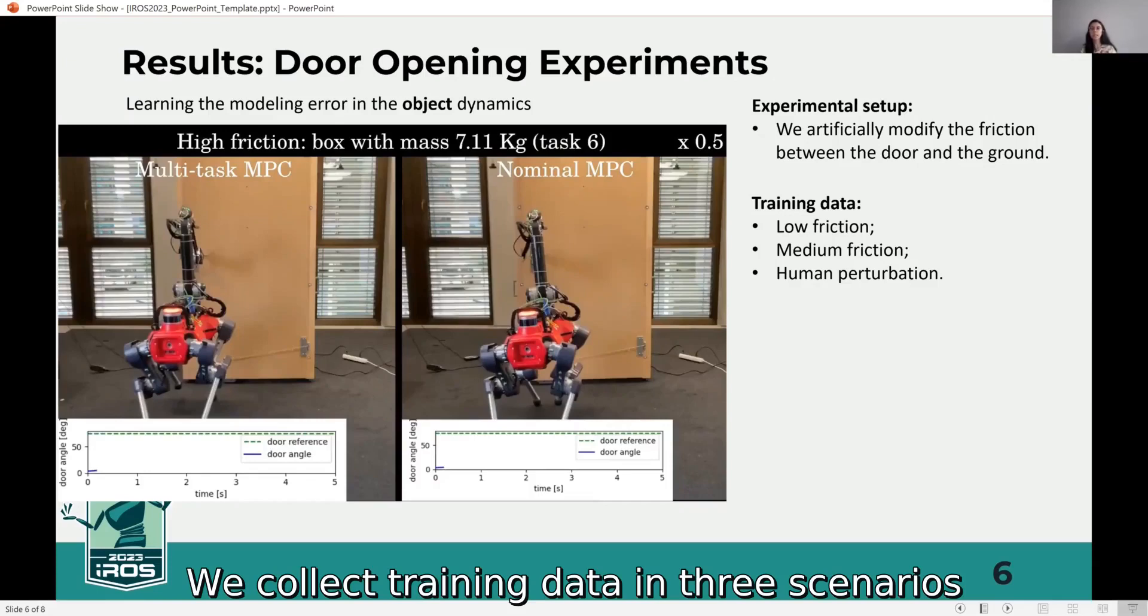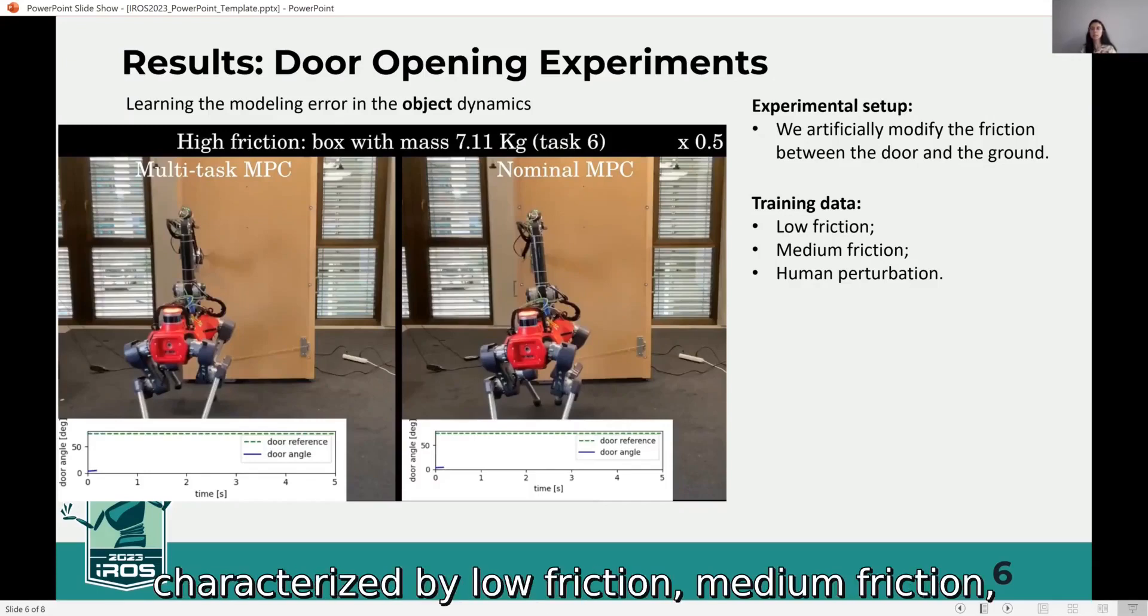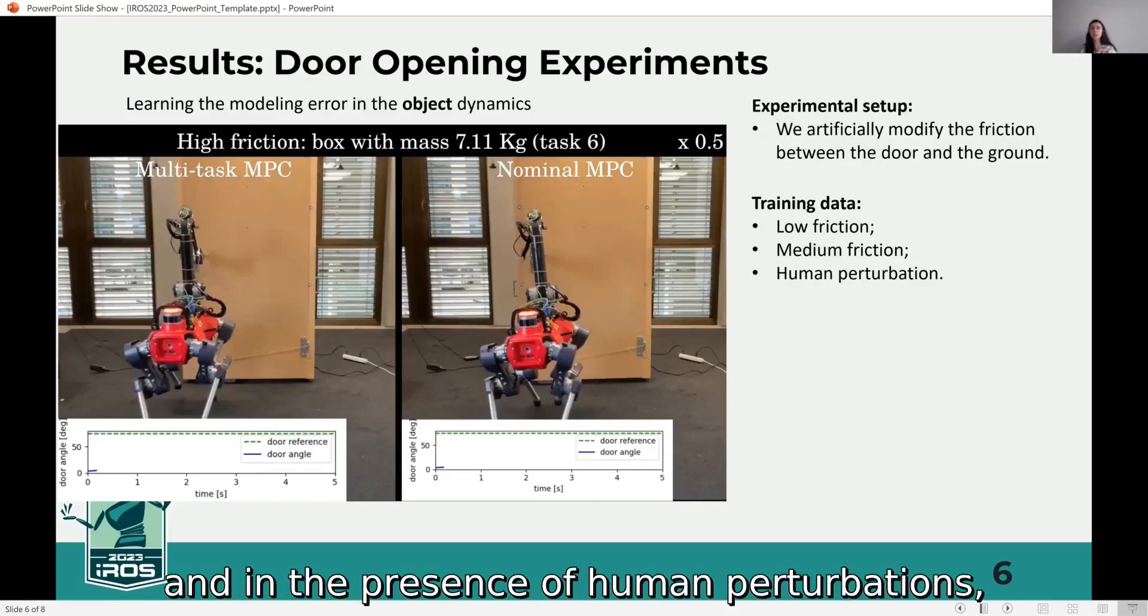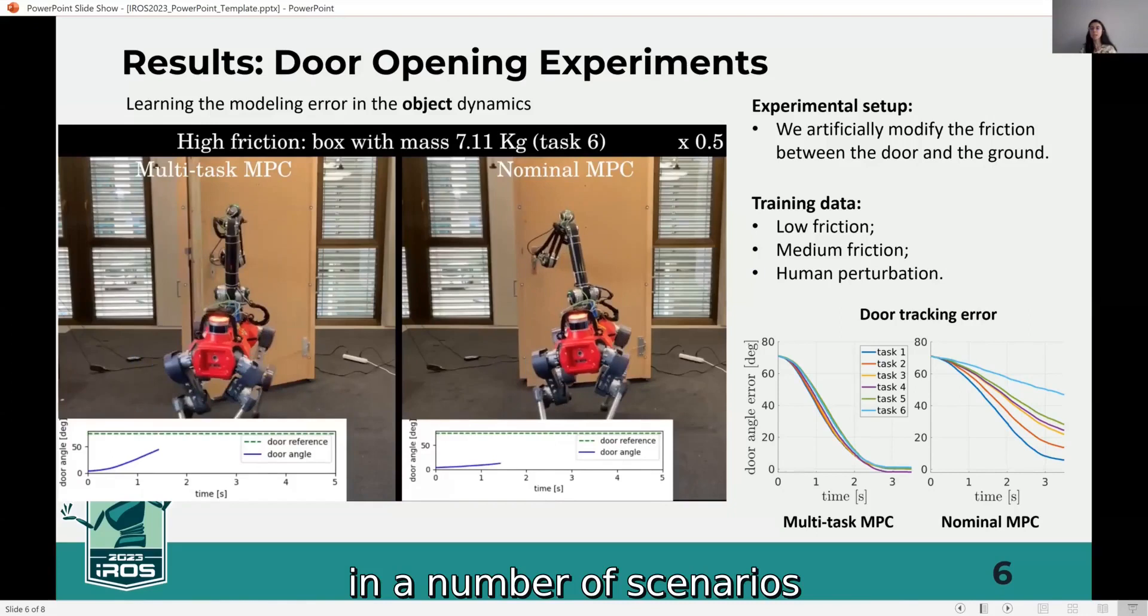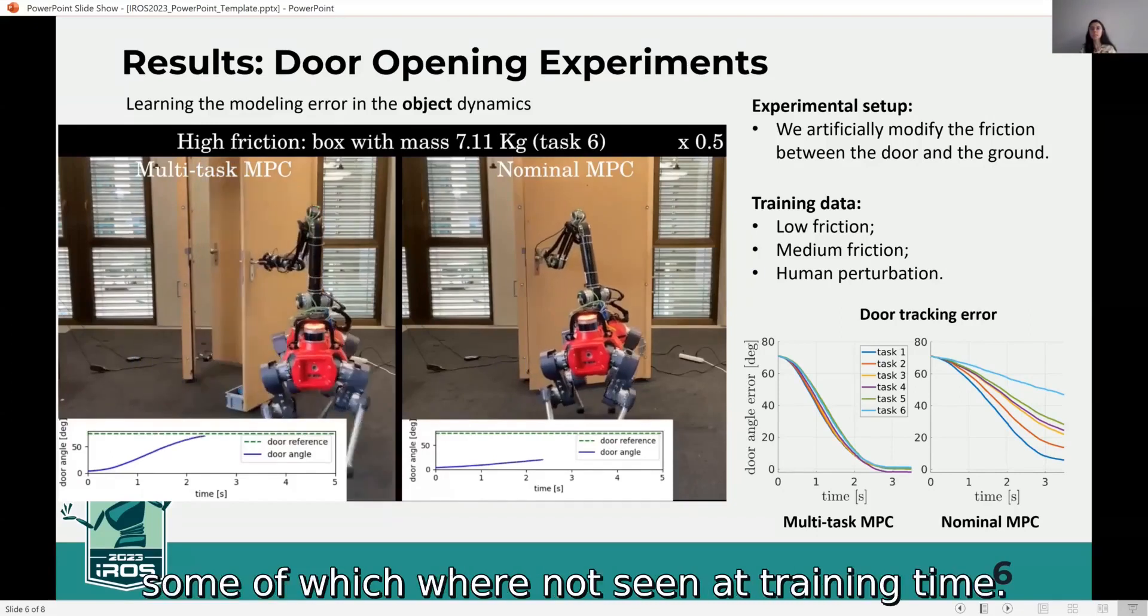We collect training data in three scenarios characterized by low friction, medium friction, and in the presence of human perturbations. And we test the method in a number of scenarios, some of which were not seen at training time.